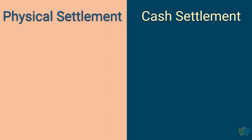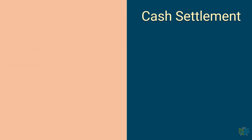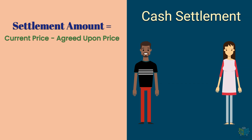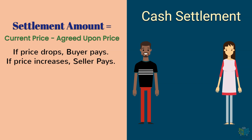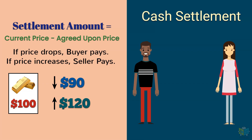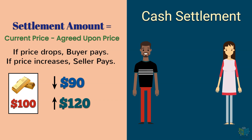Derivative contracts can be settled either by physically delivering the underlying or for cash. Most contracts are cash settled. If the contract is physically settled, Jill will deliver the gold and Jack will pay her $100. If the buyer and seller do not want to exchange the gold on the settlement date, they can choose to settle in cash. The settlement amount will be the difference between the current price and the agreed-upon price. The buyer will pay the difference if the price drops and the seller will pay the difference if the price increases. For example, if the actual price is only $90, Jack will pay the difference of $10 to Jill. If the actual price is $120, Jill will pay the difference of $20 to Jack and the contract is settled. This is similar to a bet — the loser pays the gainer.